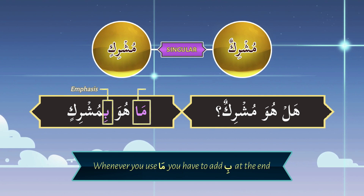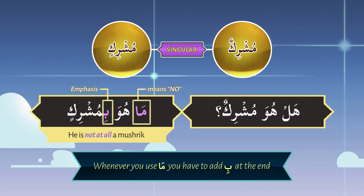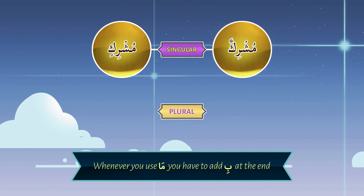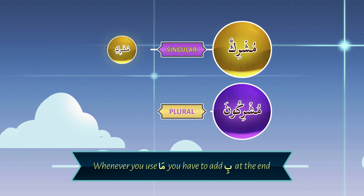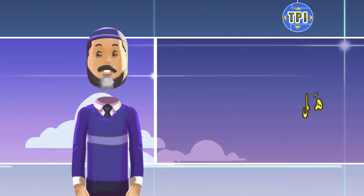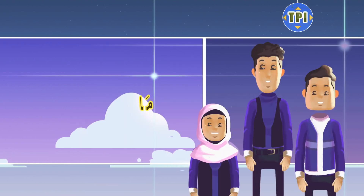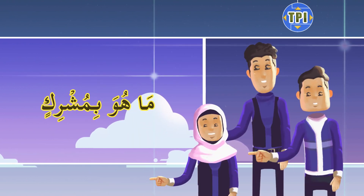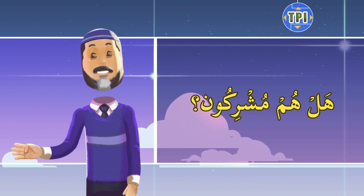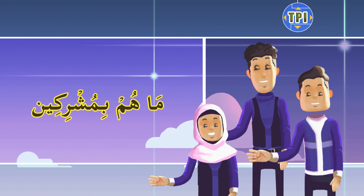So 'Ma Hua Bi Mushrik' means 'he is not at all a Mushrik'. Also remember, the plural of 'Mushrikun' is 'Mushrikun', and the plural of 'Mushrikin' is 'Mushrikin'. So: Hal Hua Mushrik? — Ma Hua Bi Mushrik. Hal Hum Mushrikun? — Ma Hum Bi Mushrikin.